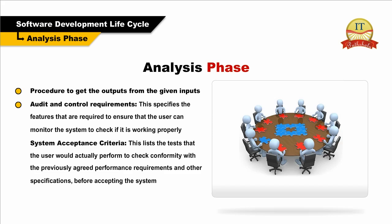The function specification also covers audit and control requirements, which specifies the features required to ensure that the user can monitor the system to check if it is working properly. System Acceptance Criteria lists the tests that the user would actually perform to check conformity with the previously agreed performance requirements and other specifications before accepting the system.